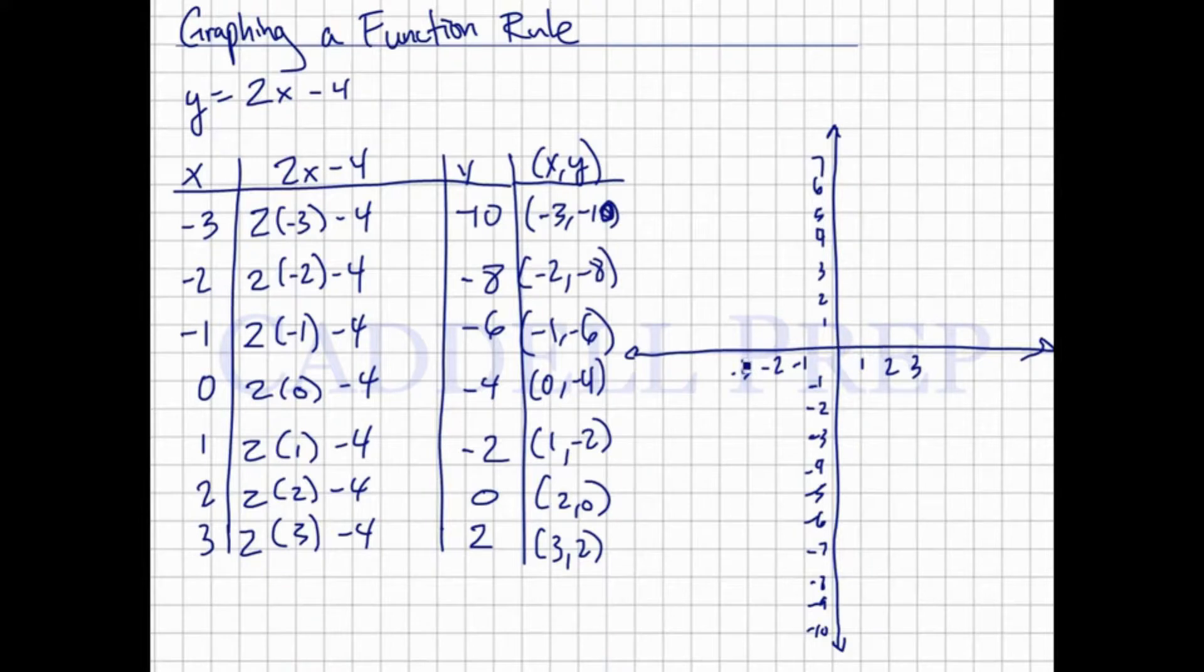So now let's graph these. Negative 3, negative 10 is here. Negative 2, negative 8. Negative 1, negative 6. 0, negative 4. 1, negative 2. 2, 0. And 3, 2.